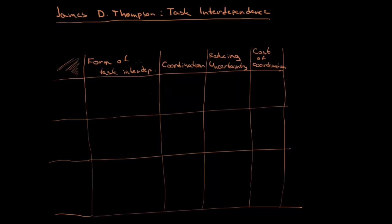In the last video I started to introduce the theory of James D. Thompson about task interdependence — that this interdependence is the key point determining what kind of organizational structure we are going to have. I also wrote down the three different types of technology: the first one was mediating, the second one was long linked, and the final one was intensive.